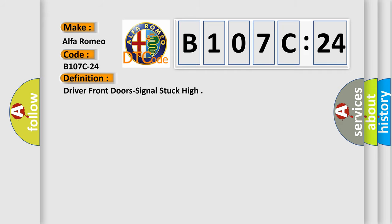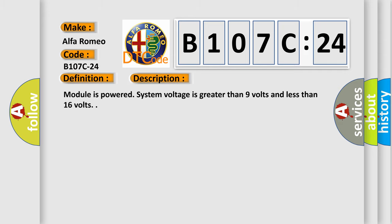The basic definition is Driver front doors signal stuck high. And now this is a short description of this DTC code: Module is powered, system voltage is greater than 9 volts and less than 16 volts.